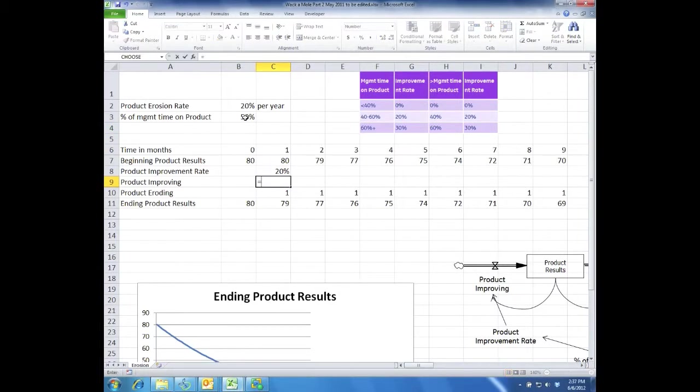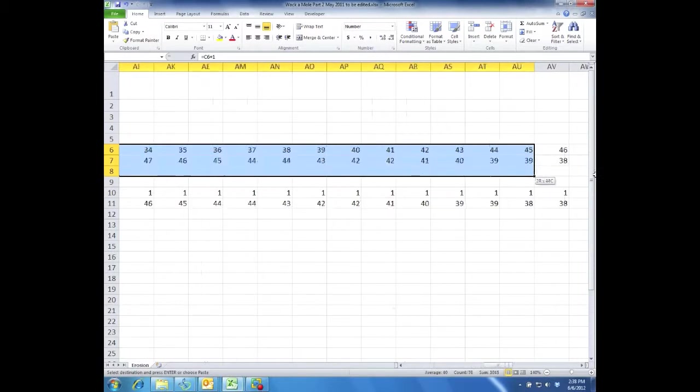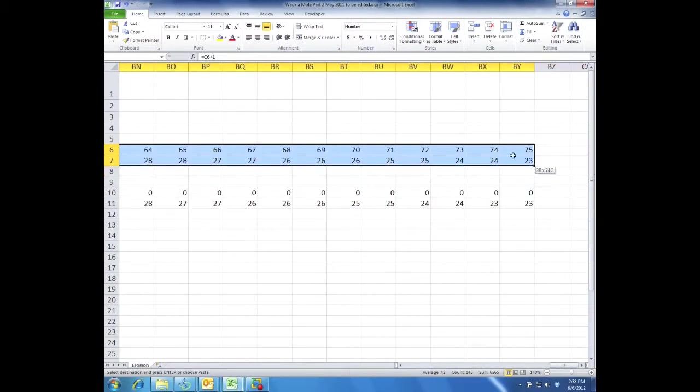Product improving is the product results times the improvement rate. That's too big of a number. The improvement rate is the yearly number and we are doing time in months. So I'm going to divide by 12. So it improves by 1 and it erodes by 1. So the new ending product results is really the beginning plus the inflow minus the outflow and it becomes 80 again. So our model is done. Let me copy it and we'll take a look at its results.